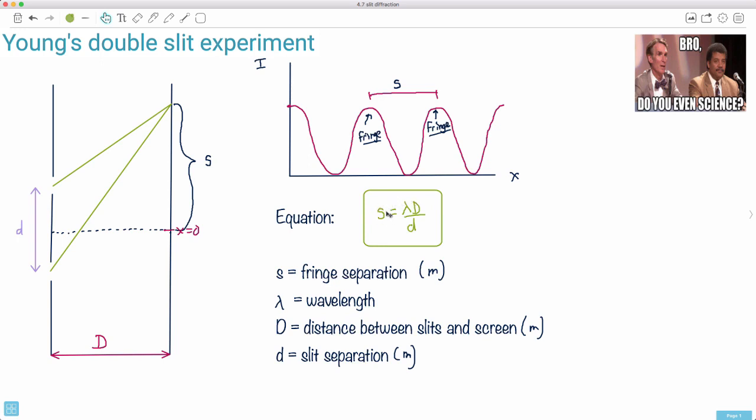If I want to increase the fringe separation, what should I do? To make this bigger, I can make lambda bigger, I can make D bigger, or I can make little d smaller. You can start thinking quantitatively about this as well as qualitatively. The wavelength is also in meters, so luckily the units all work out. Meters times meters over meters—the meters cancel out, so it all works out.